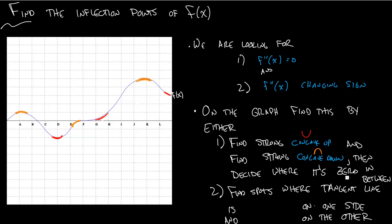So I'll highlight these in green for now. But somewhere in between this concave down and this concave up, it needs to be zero. And I'm going to say it's at C. Somewhere between this concave up and this concave down, it needs to be zero. I'm going to say it happens at E. Somewhere between this concave down and this concave up, it needs to be zero. We'll say that's at F.